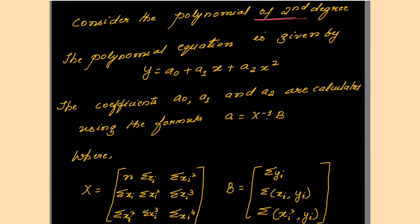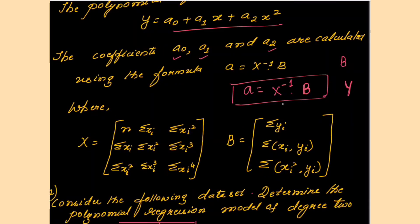For a second degree polynomial, the coefficients a₀, a₁, and a₂ are calculated using the formula A = X⁻¹ × B. The X matrix is a 3×3 matrix with elements: first row — n, Σxᵢ, Σxᵢ²; second row — Σxᵢ, Σxᵢ², Σxᵢ³; third row — Σxᵢ², Σxᵢ³, Σxᵢ⁴. The B matrix has one column with elements: Σyᵢ, Σxᵢyᵢ, and Σxᵢ²yᵢ.